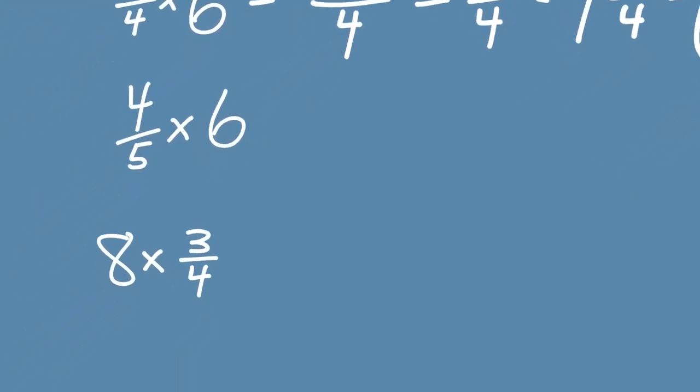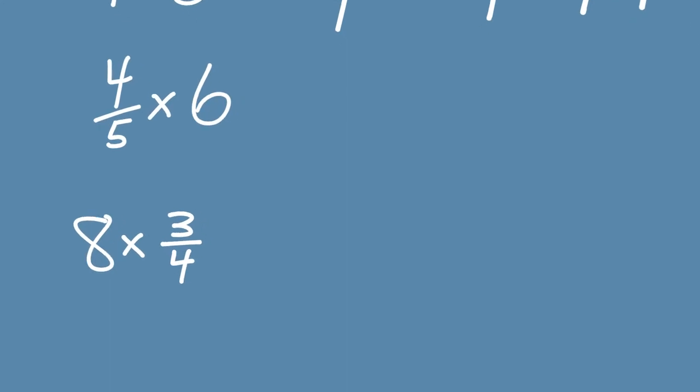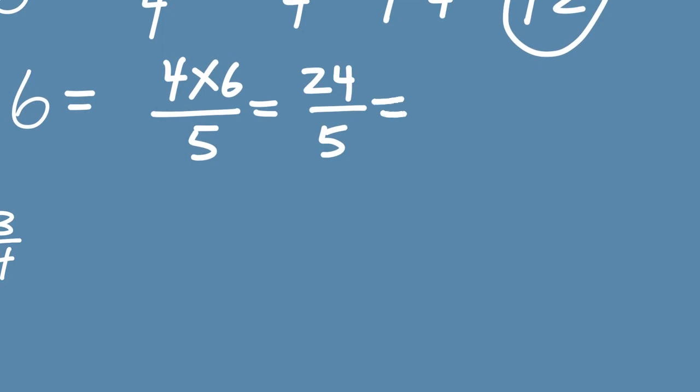Moving on. 4 fifths times 6. We can rewrite that as 4 times 6, all over 5. We know 4 times 6 is 24. Over 5. Improper. 5 into 24 goes 4 times with 4 left over. So, 4 and 4 fifths.